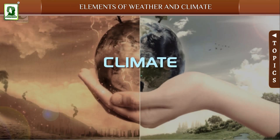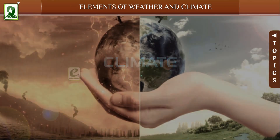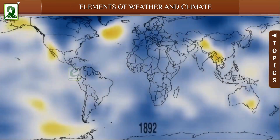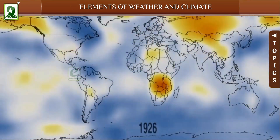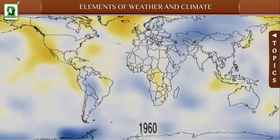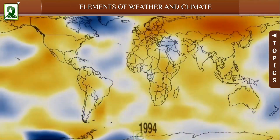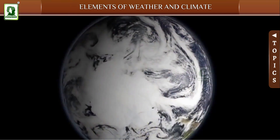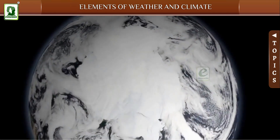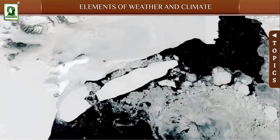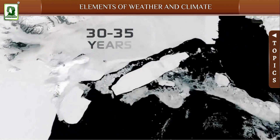Climate is the average weather condition of a place for a long period of time. It is generally the average weather conditions taken over a period of 30 to 35 years.